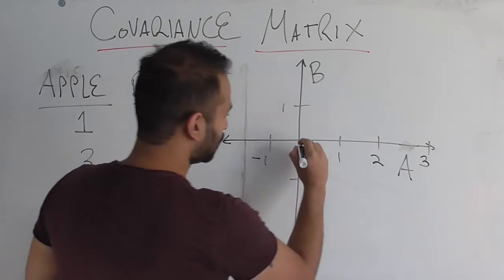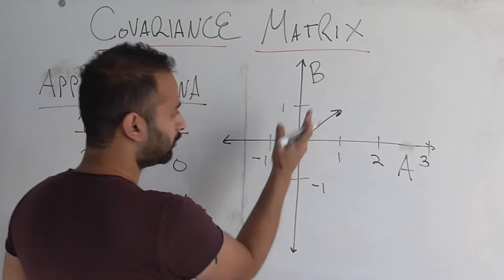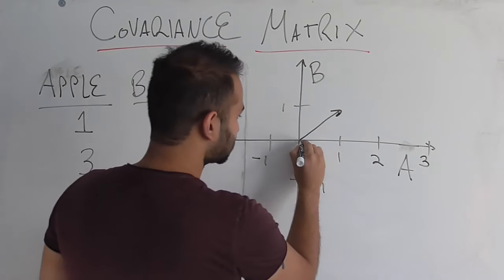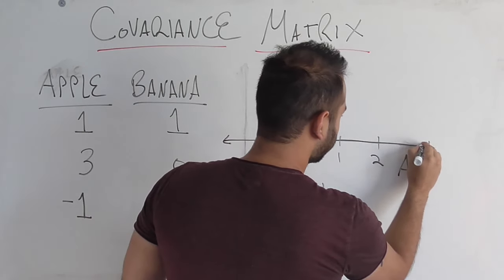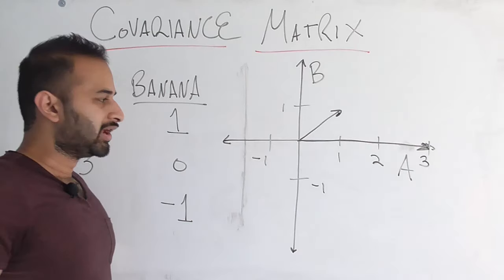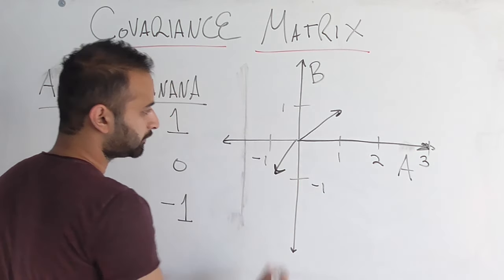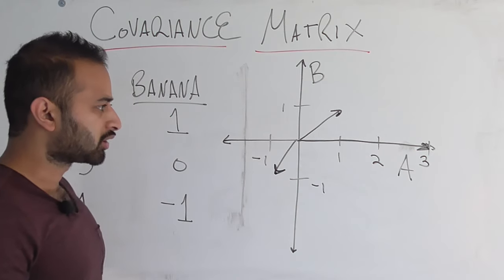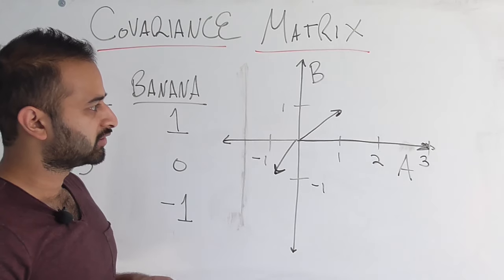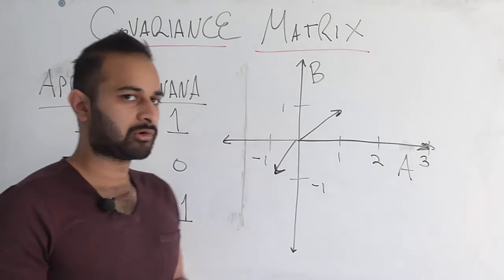Let's represent those data points as vectors on our apple-banana grid. The first one is at (1, 1), the next one is at (3, 0) — living on the apple axis — and the last one is at (-1, -1). Our goal is to figure out whether there's some kind of covariance between the apple and banana variables.